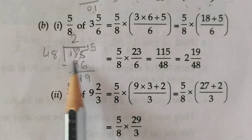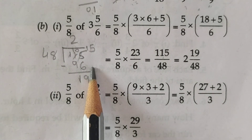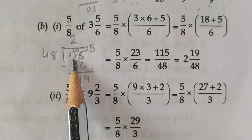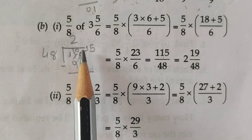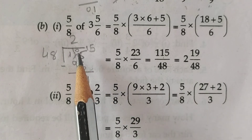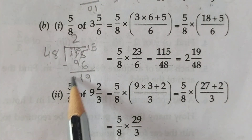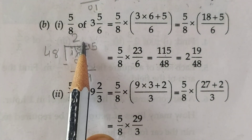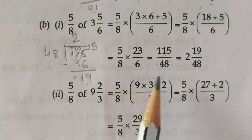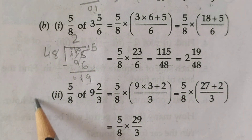Now students, 115 upon 48 is an improper fraction — convert it into a mixed fraction. 115 divided by 48: 48 twos are 96. 115 minus 96 — borrowing as needed — gives remainder 19. So the quotient is 2, write down as whole number. Remainder 19 as numerator and 48 as it is. In this way you have to solve this sum. The second part is in your homework.